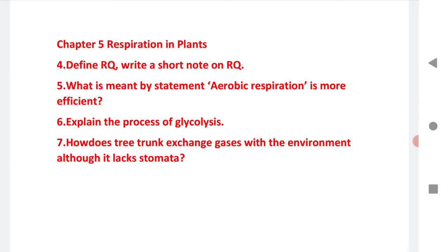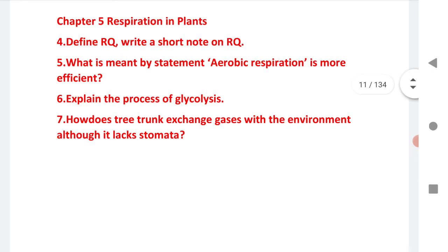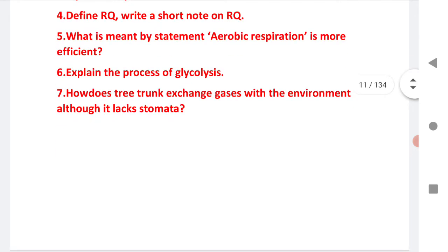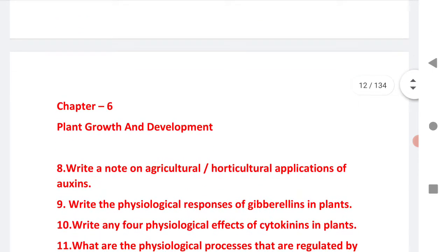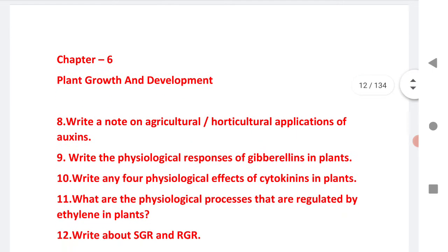The next SAQs are from chapter 5, Respiration in Plants: define RQ and write a short note on RQ; what is meant by the statement that aerobic respiration is more effective; explain the process of glycolysis; and how does a tree trunk exchange gases with the environment although it lacks stomata.